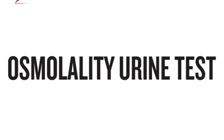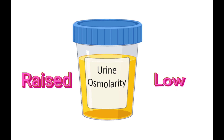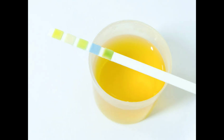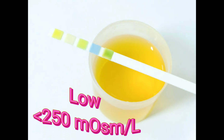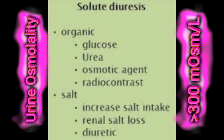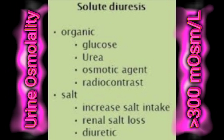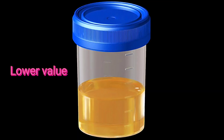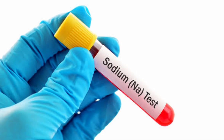In case of a normal plasma glucose level, you have to run a urine osmolality test. Again you will come up with two possibilities: either it is raised or low. If raised, it is more than 300 milli-osmoles per liter; the lower threshold is less than 250 milli-osmoles per liter. A urine osmolality value more than 300 milli-osmoles per liter is a clear-cut case of solute diuresis, which is caused by drugs such as diuretics, mannitol, contrast, or urea.